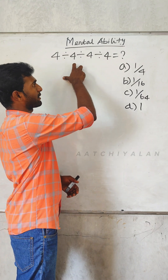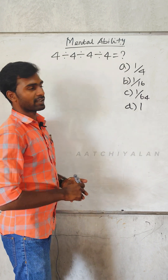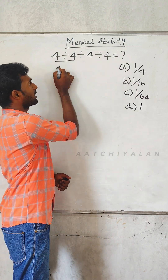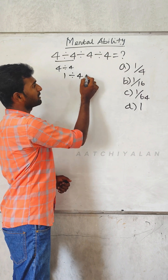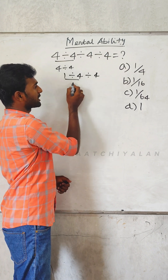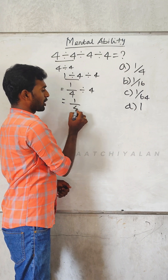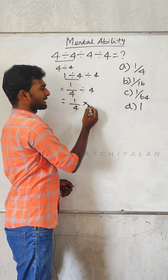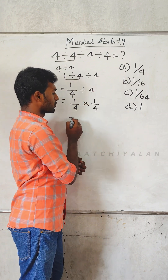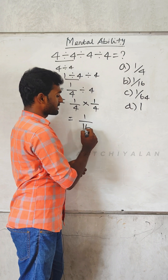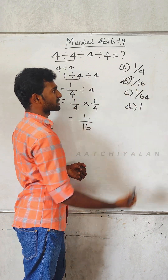Divide by 4, divide by 4, divide by 4, divide by 4. So 4 by 4 equals 1. 1 by 4, 1 by 4. Answer: 1 by 16. 1 into 1 is 1, 4 into 4 is 16. So the answer is 1 to 16.